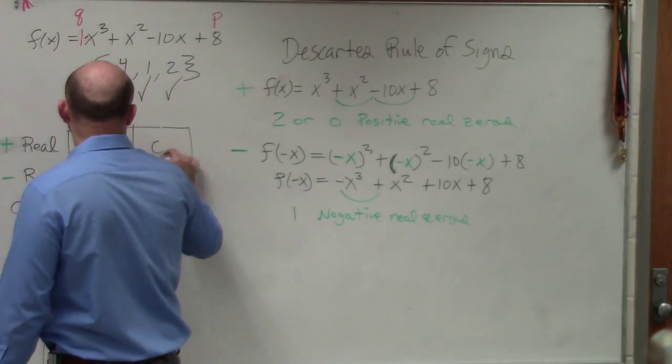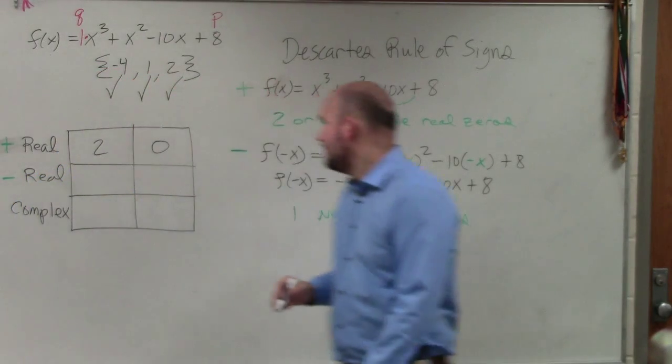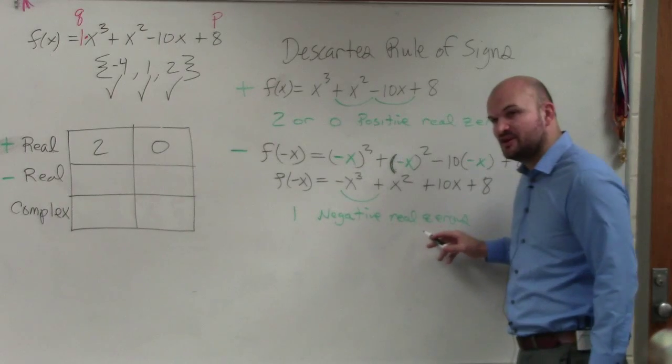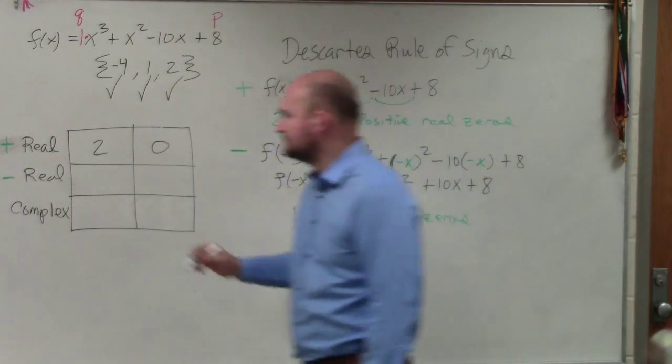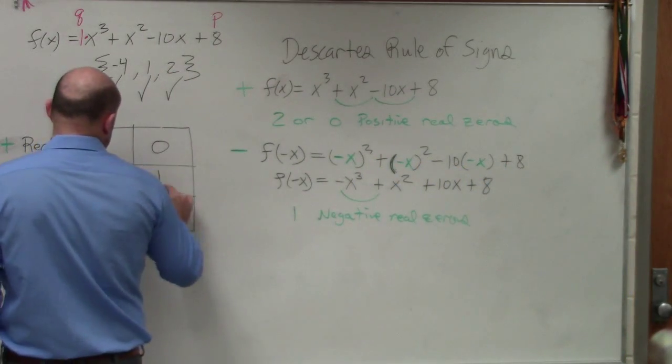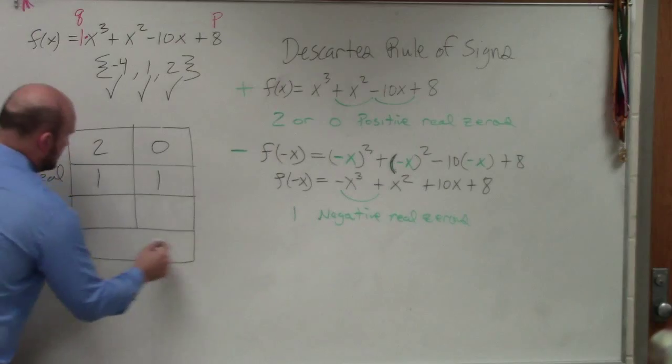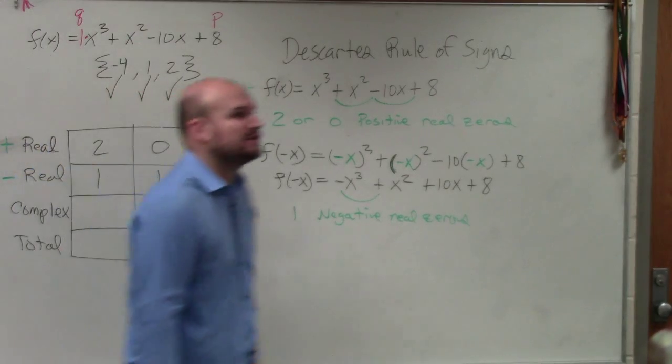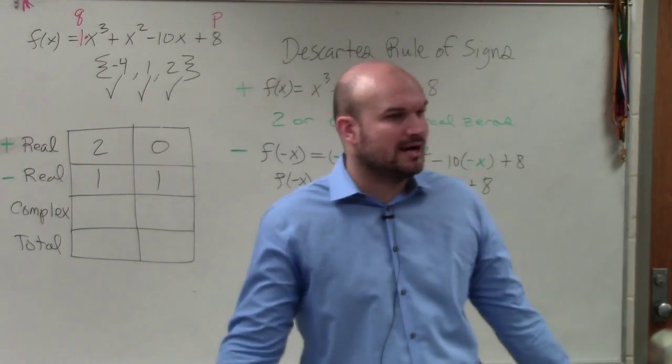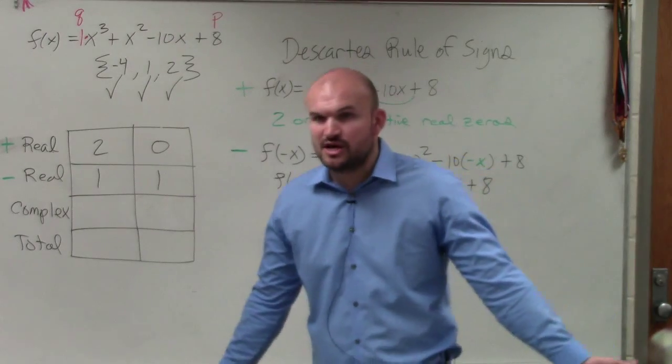So there's either two or zero. Then, how many negative did I say there were? One. I forgot to add total. Now, based on the degree of this polynomial, how many zeros are there, real or complex? How many zeros are there?